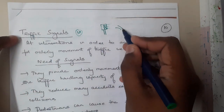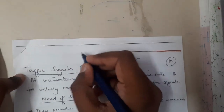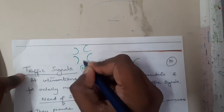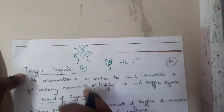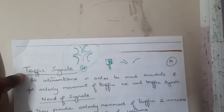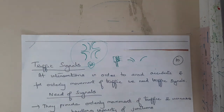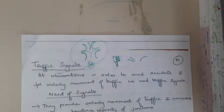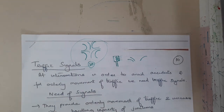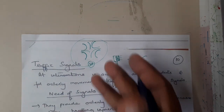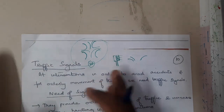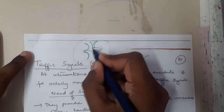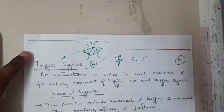Traffic signals are commonly used at intersections, where two or three roads combine at the same point. Here four roads are combining. In this situation, traffic lights are really important to control traffic, because we cannot hire a police officer just to do that work. Standing in the sun doing all that controlling would be a tough task, so we use traffic signals instead.